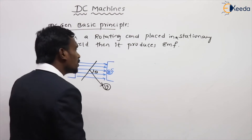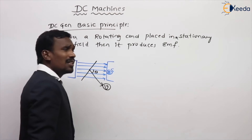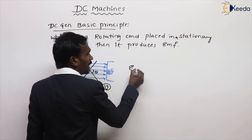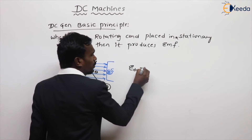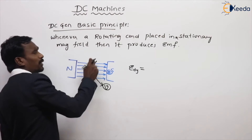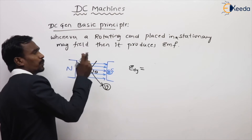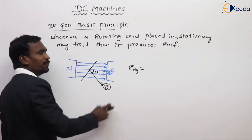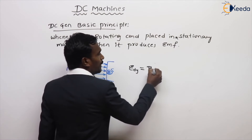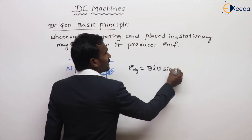According to Faraday's law, the induced EMF in this conductor — when a rotating conductor is placed in a stationary magnetic field — equals B L V sin theta.